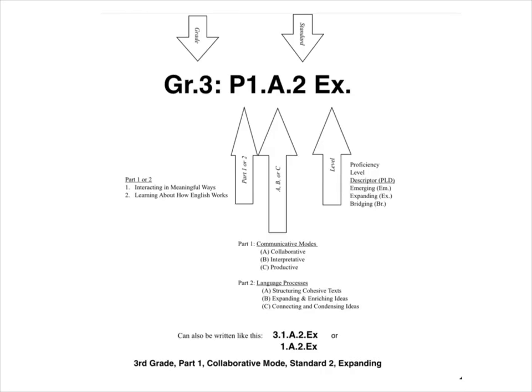Or if you're in a book where everything's third grade, you could just eliminate the 3 at the beginning and write 1 for Part 1, A, 2, expanding. So that's 3rd grade, Part 1, collaborative mode, standard 2, expanding. I know it's a little bit complicated because it's new, but just like everything else in our teaching world, it will just get easier with time.